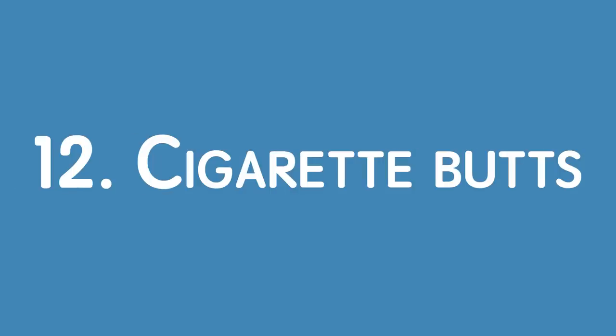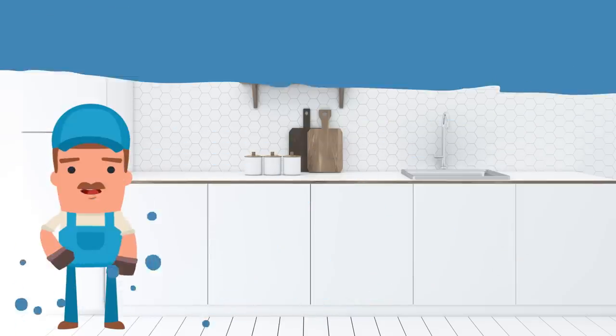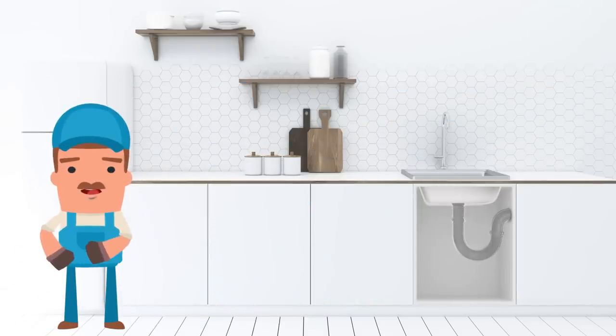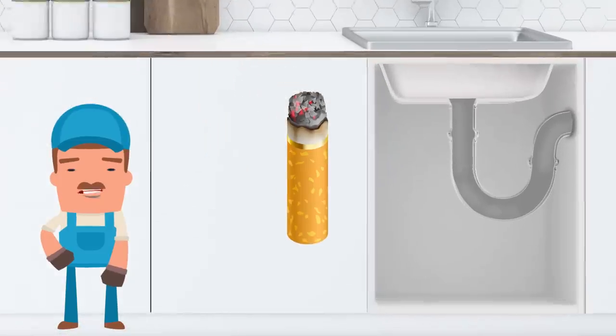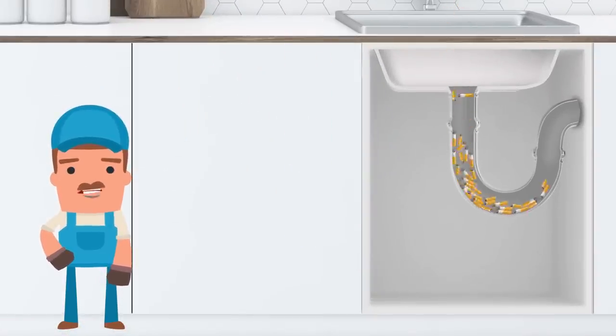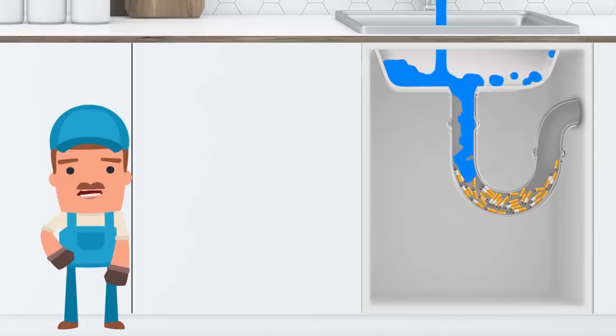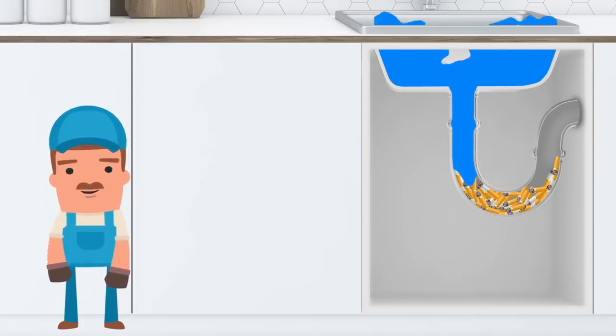Number 12. Cigarette butts. The problem with cigarette butts is that the filter absorbs water and expands. But the worst part is that it's made of a synthetic material that never dissolves. Cigarette butts also contain loads of harmful chemicals, like nicotine, which can contaminate the water supply.